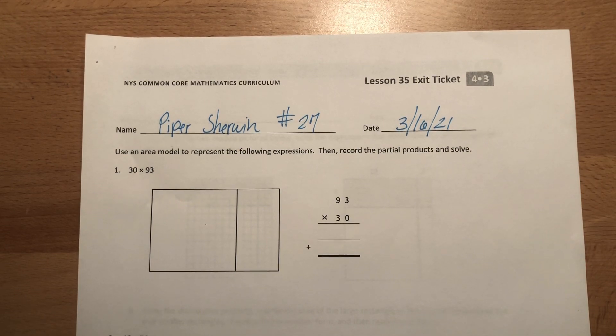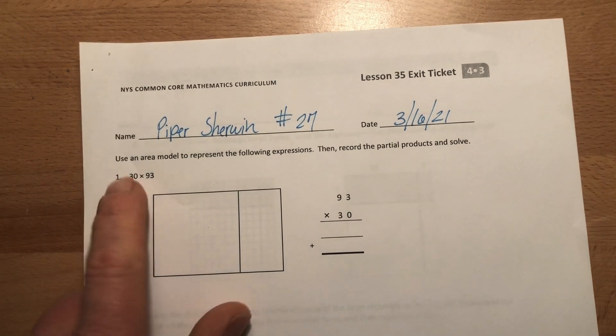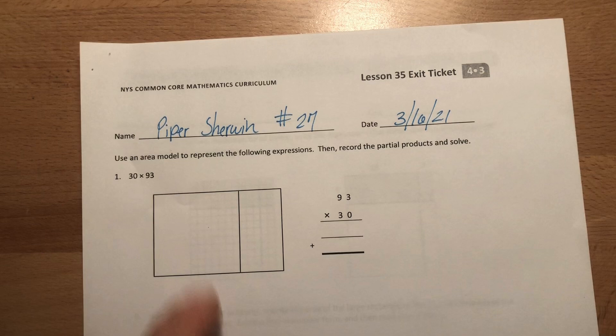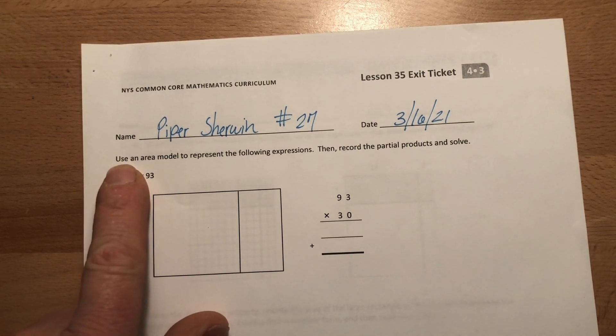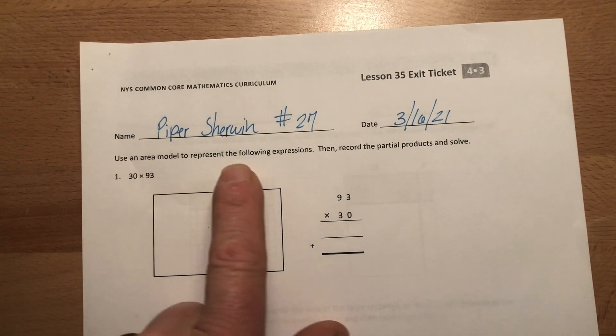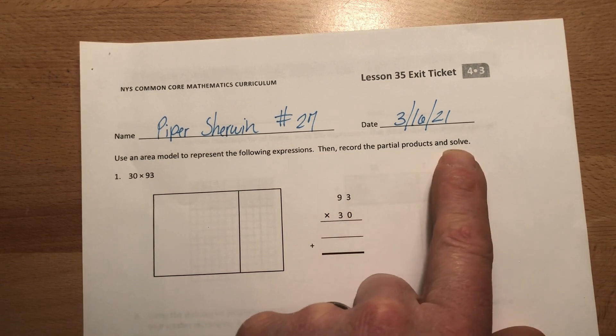This is our exit ticket from yesterday. We want to see how much you remember from doing the lesson, see how well you paid attention and what you retained. Okay, so here's the direction. It says use an area model to represent the following expressions, then record the partial products and solve.